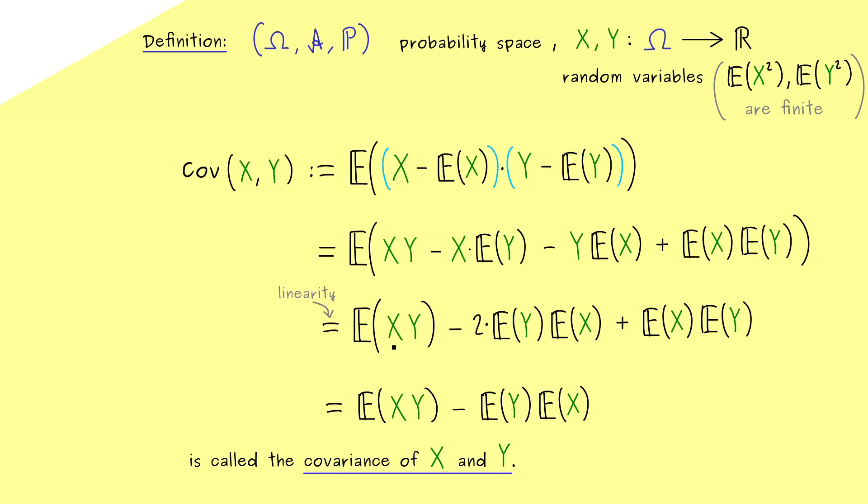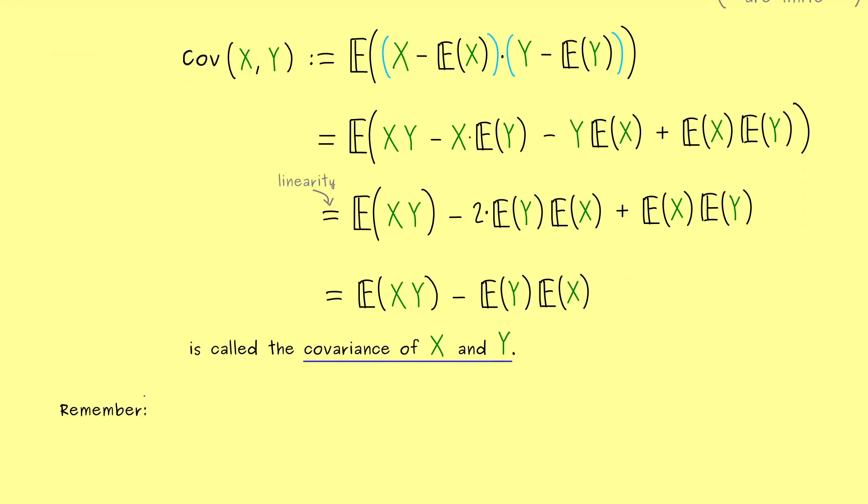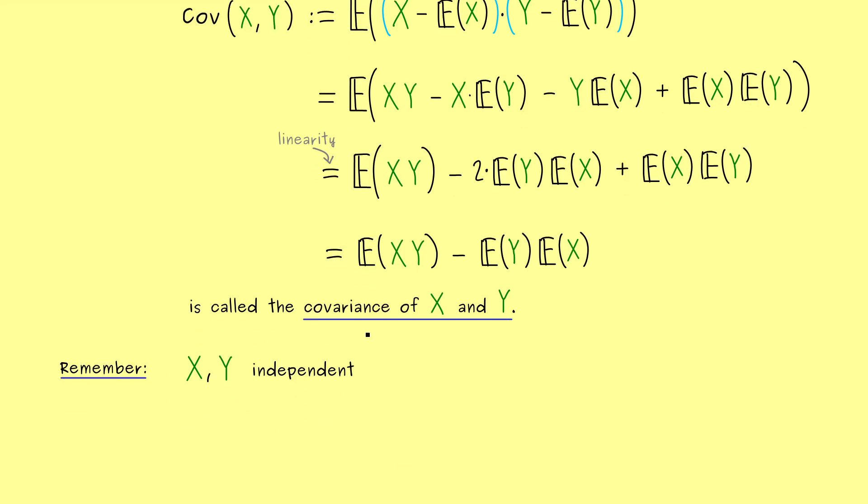And moreover, this definition shows you that the covariance measures how close the two variables X and Y are to independence. This makes sense, because we already know what independence means for the expectations. In fact, if we assume that X and Y are independent, we know that this expectation is just the product of the two expectations. In other words, the covariance is zero in this case.